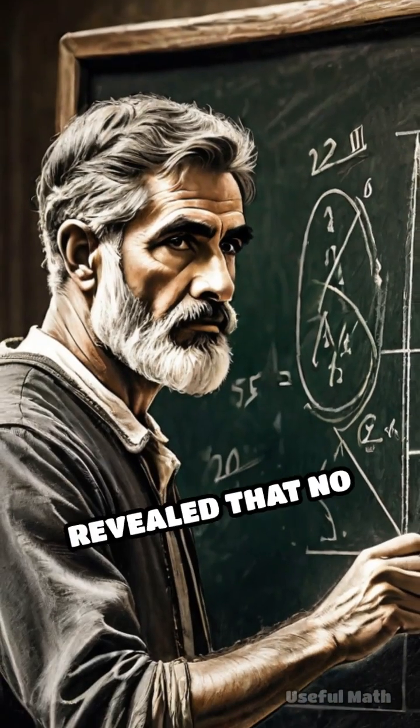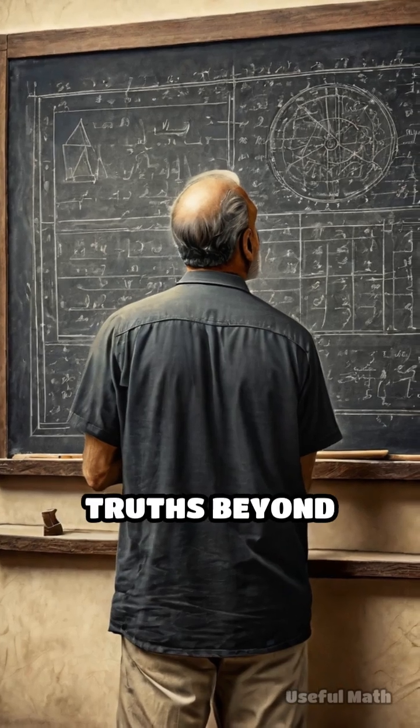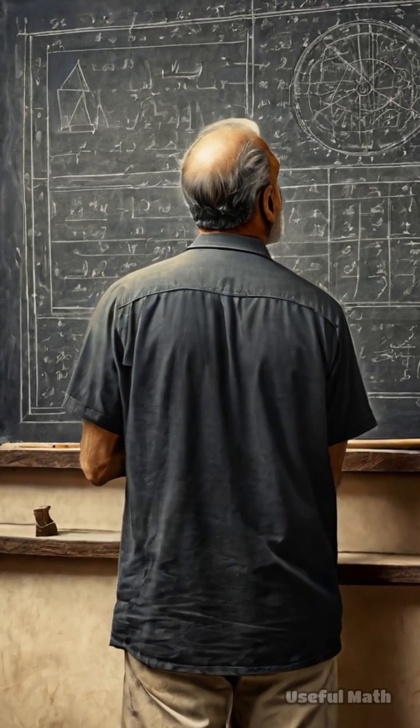Gödel's first theorem revealed that no set of rules is both complete and consistent. There are always truths beyond reach, no matter how comprehensive the system seems.